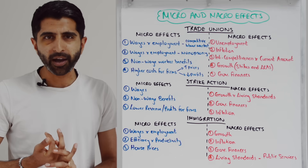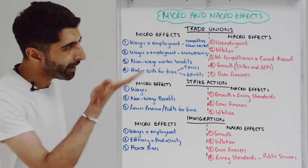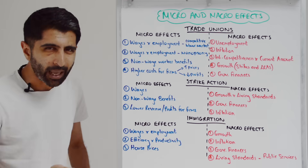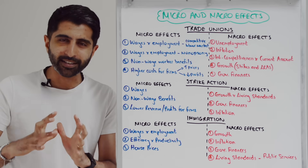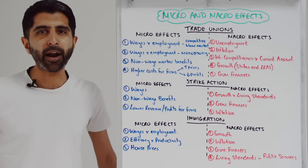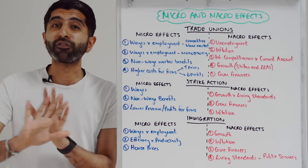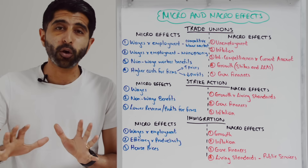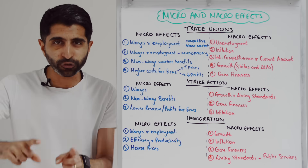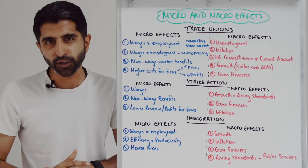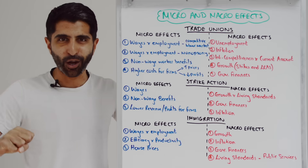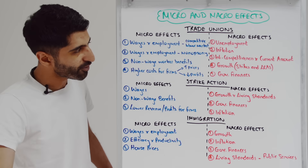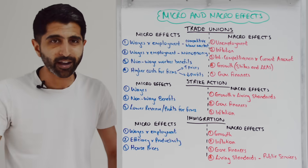So there you have it — the micro and macro effects of a variety of labour market themes. Make sure you're okay with all of these effects and can develop them into nice detailed paragraphs. I've done this for a variety of other topic areas in the course — all those videos are in my revision for paper 3 playlist, so go and check those out. Thank you so much for watching this video — can't wait to see you in the next one.